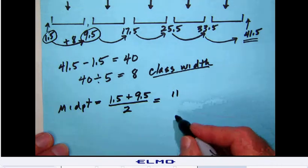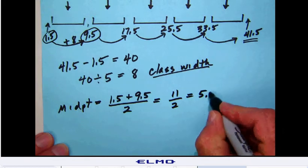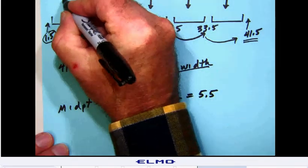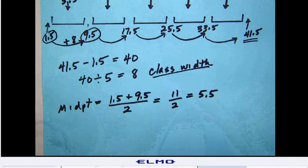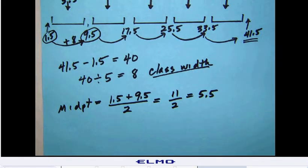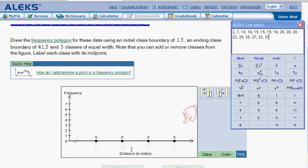And 11 divided by 2 is 5.5. So that means that our first midpoint is 5.5, which means that over here on our ALEC screen, what we're going to want to do is down here at the bottom, put those midpoints, and the first of those is 5.5.